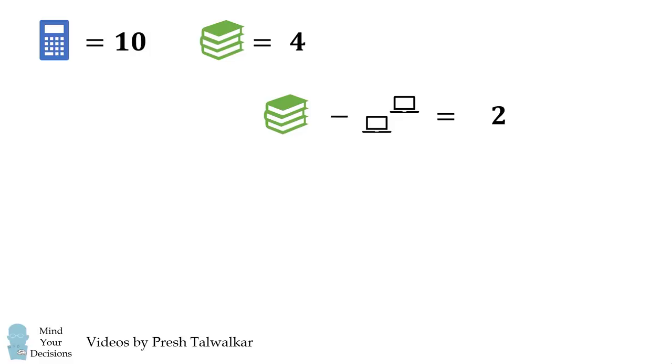We get to the third equation. We now substitute that 4 minus 2 of these laptops is equal to 2. This means 4 minus 2 is equal to 2 laptops, or 2 is equal to 2 laptops. Here's where the interpretation comes into play.